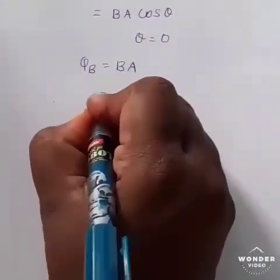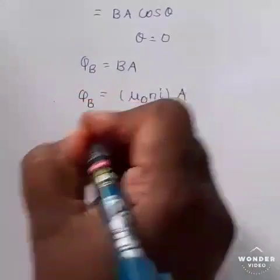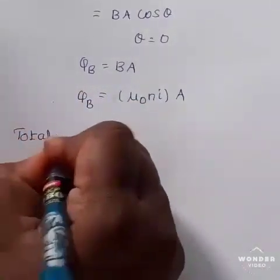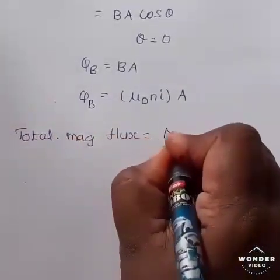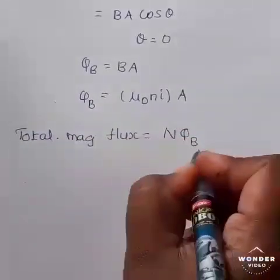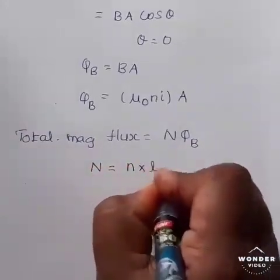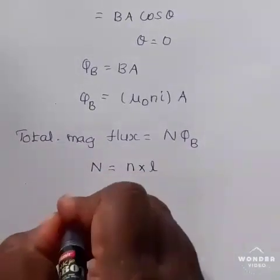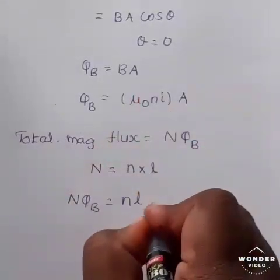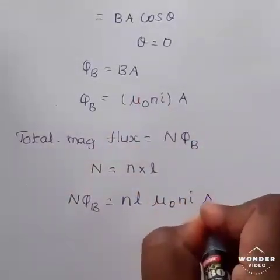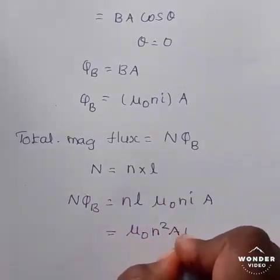Substituting the value of B = μ₀NI, the magnetic flux becomes Φ_B = μ₀NIA. Next, we find the total magnetic flux. Total magnetic flux = N·Φ_B, where N is the number of turns and Φ_B is the magnetic flux per turn. The number of turns equals turn density multiplied by L. Substituting, total magnetic flux = NL·μ₀NIA = μ₀N²A·I·L.